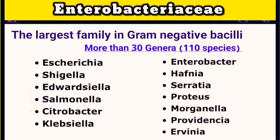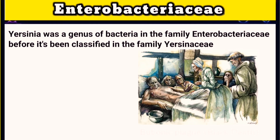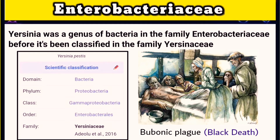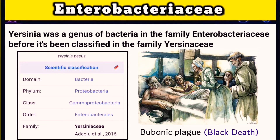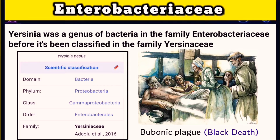Other species were previously classified under this family, like Yersinia, which causes bubonic plague. This organism killed one-third of the population during the 14th century, but since 2016, Yersiniaceae have been classified as a separate family, though still included in the order Enterobacterales, which also includes Enterobacteriaceae.